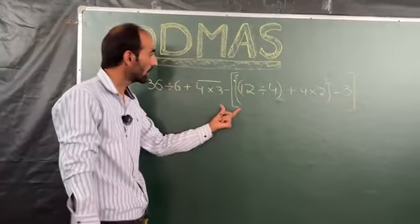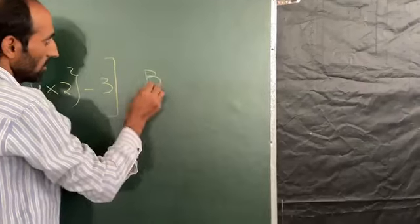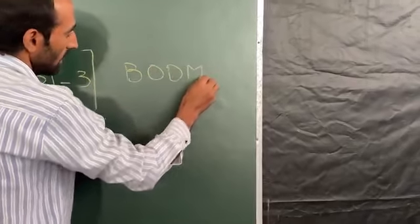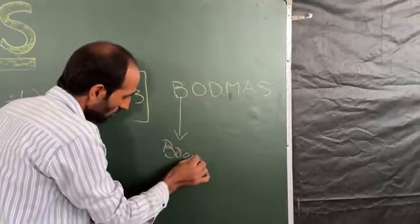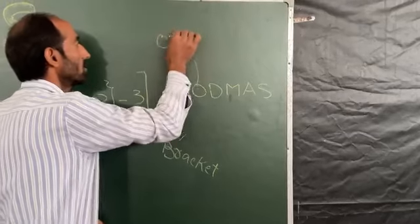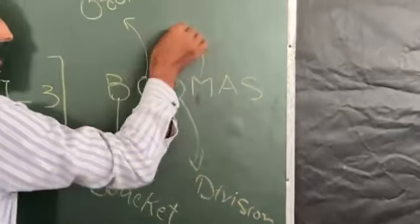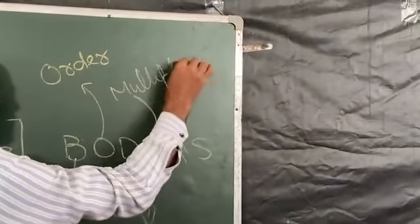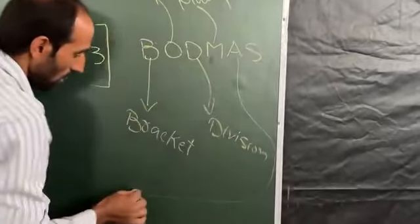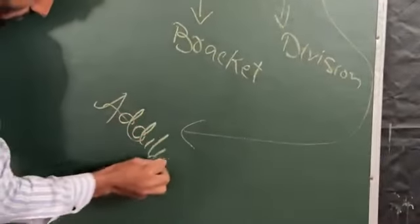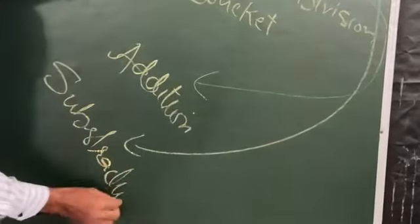Before dealing with this question, first we will know what is BODMAS. It stands for B-O-D-M-A-S: B stands for bracket, O stands for order, D stands for division, M stands for multiplication, A stands for addition, and S stands for subtraction.